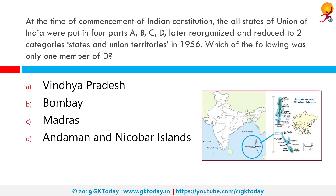At the time of commencement of the Indian constitution, all states of the Union of India were put in four parts: A, B, C, and D, later reorganized and reduced to two categories — states and union territories — in 1956. Which of the following was the only member of Part D? The correct answer is the Andaman and Nicobar Islands, one of the seven union territories of India, comprising 572 islands of which 37 are inhabited, at the juncture of the Bay of Bengal and the Andaman Sea. On 1st August 1974, the Nicobar Islands were carved off into another revenue district with headquarters at Car Nicobar. In 1982, the post of Lieutenant Governor was created to replace the Chief Commissioner as the Head of Administration. The islands send one representative to the Lok Sabha.